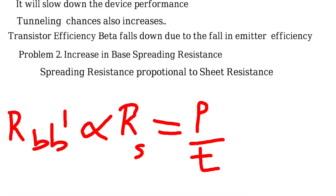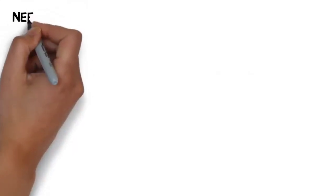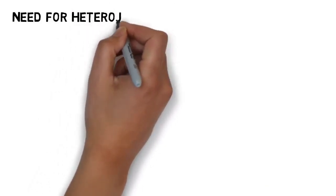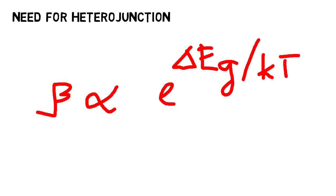Now we can discuss about the need for a heterojunction. The beta of the transistor is proportional to e raised to ΔEg divided by kT, where ΔEg is the difference in energy band gap of the material. ΔEg is equal to E_GE minus E_GB, where E_GE is the energy band gap of the emitter and E_GB is the energy band gap of the base.